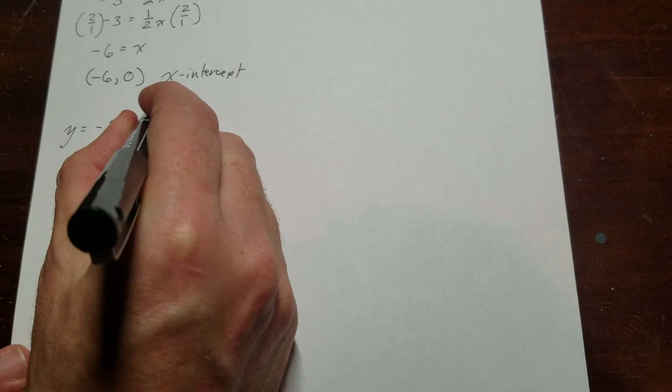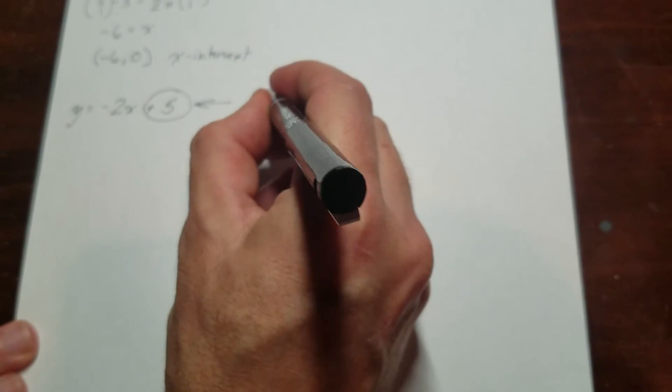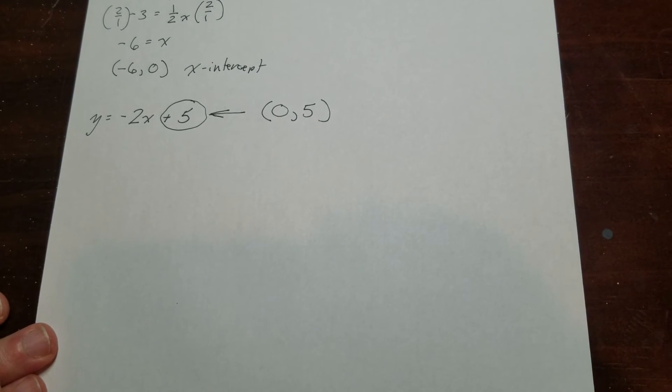Again, in order to do my y-intercept, there it is right there. So x would be 0, and y would be 5. Y-intercept, piece of cake on these guys.